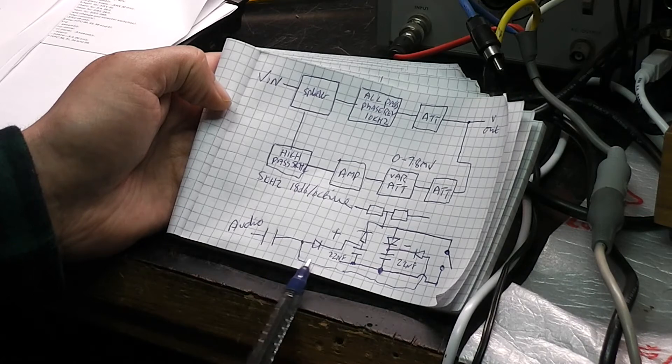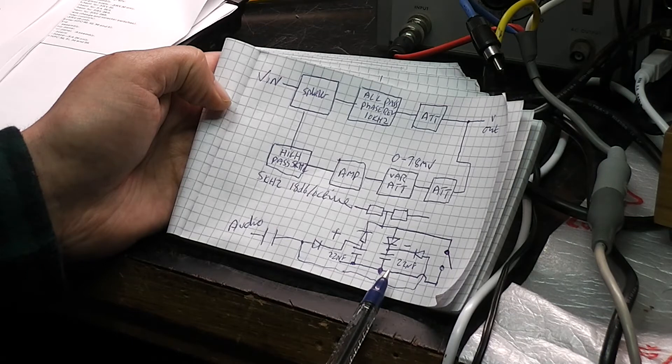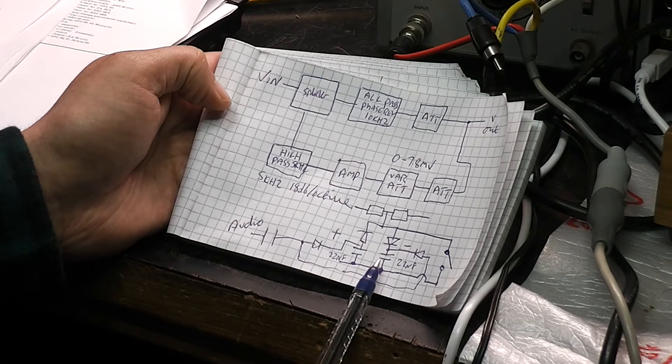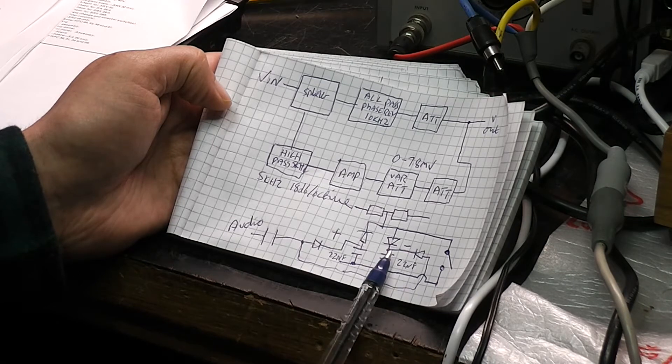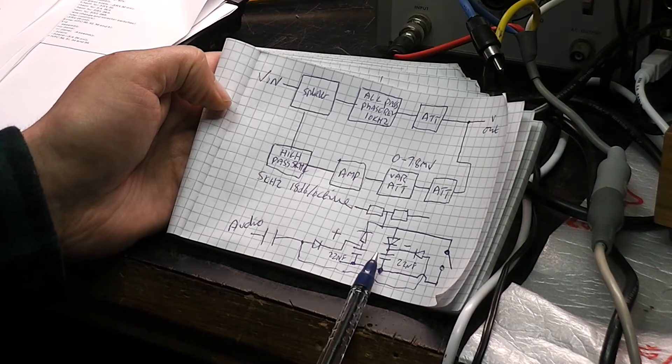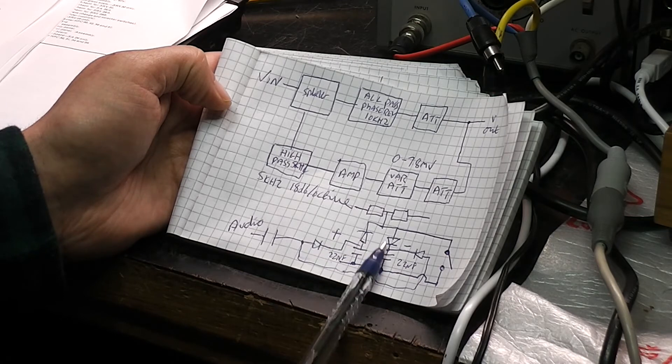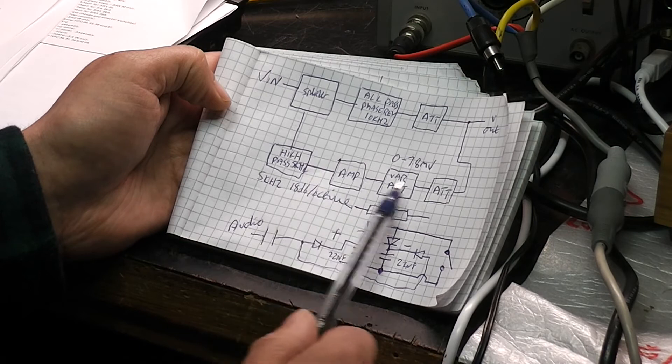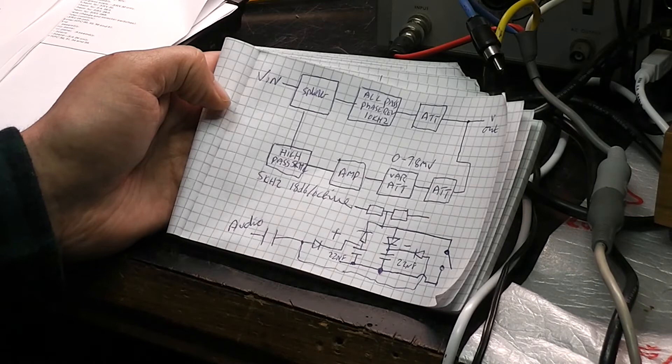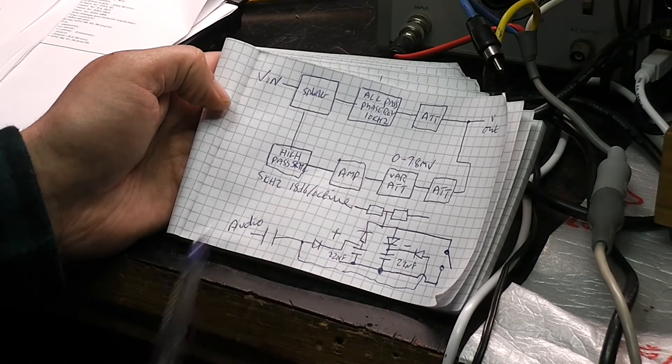So basically we've got an automatic gain control on the high frequencies above 5kHz. So on lower passages of the music or whatever's on the tape, the high frequencies have been attenuated. But as you get above, I think it's minus 38 or something like that, this attenuator is fully on, so there is no attenuation of the high frequency at all. So that's basically how the DNL works, and it's separate from the rest of the tape recorder circuit. It's on a separate board.